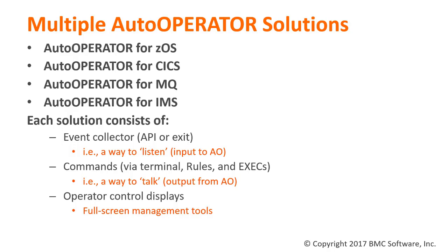MainView Auto Operator provides several different technology-based solutions dependent upon the subsystems and environments that the user needs to automate. These solutions are: Auto Operator for ZOS, used for automating the ZOS and ZOS DB2 environments; Auto Operator for CICS, used to automate and respond to CICS situations, messages, and events; Auto Operator for MQ, used for automation in the ZOS MQ Series environment; and Auto Operator for IMS, used to automate and respond to IMS DBDC and DB control events, messages, and situations.